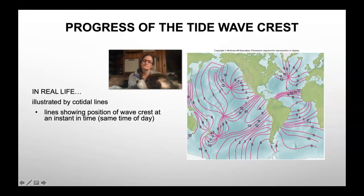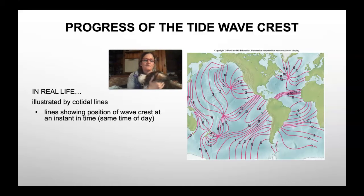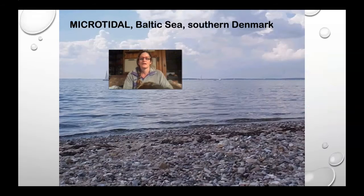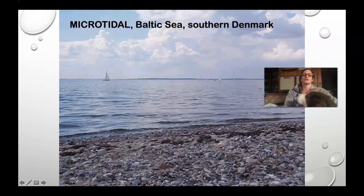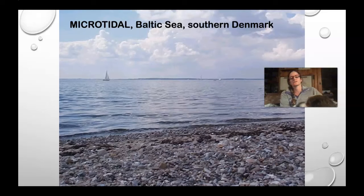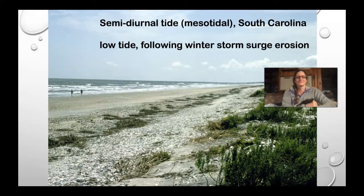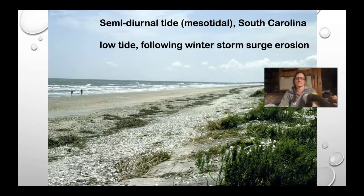In real life, instead of having just perfect patterns, it looks more like this — a line showing the position of the wave crest at an instant in time, the same time of day. The wave of the tides is not a perfect pattern. There are micro tides, which have a really small difference between highs and lows. On the beach in South Carolina, there's a mesotidal — a medium tide.